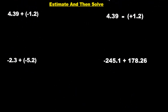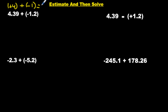Now we have to estimate and then solve. To estimate, we change the numbers a little bit: this is going to be positive 4, this is going to be negative 1 estimated, and they're added together. What's 4 positives plus a negative? It's positive 3. So our answer should be close to that. There's no symbol in front of this — yes there is, it's a positive; if you don't see it, it is a positive. So now we have 4, and we have a positive and a negative, so we have to subtract.